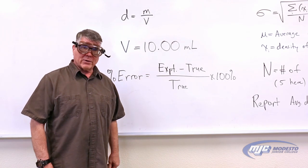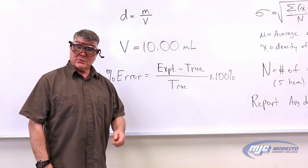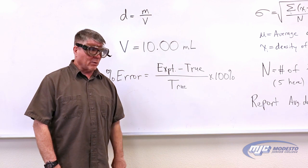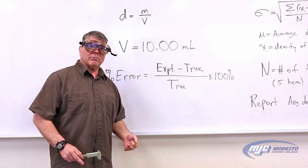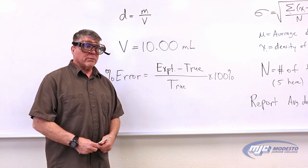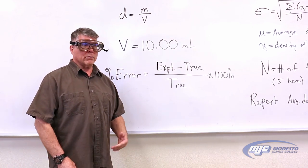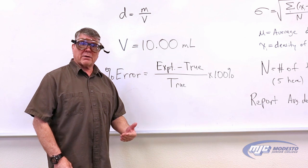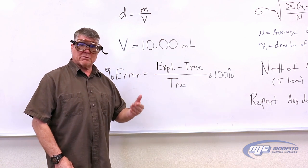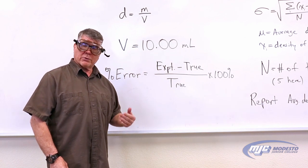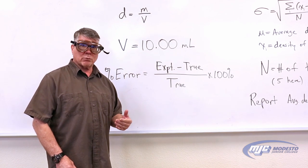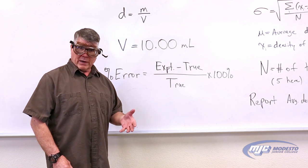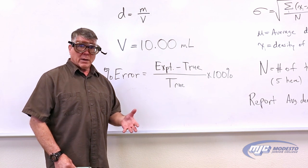Hey guys, Dr. Cadell here, and this is the density experiment. There are two parts to this experiment. In the first part, you're going to measure the mass of a measured 10.00 milliliters of deionized water five times.